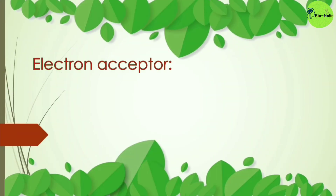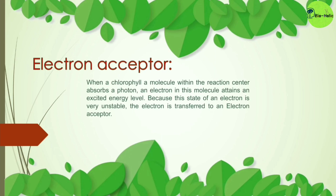The electron acceptor is also considered part of the reaction center. When a chlorophyll a molecule within the reaction center absorbs a photon, an electron in the molecule attains an excited energy level. Because this excited state is very unstable, the electron is then transferred to the electron acceptor. The primary electron acceptor in photosynthesis is pheophytine.